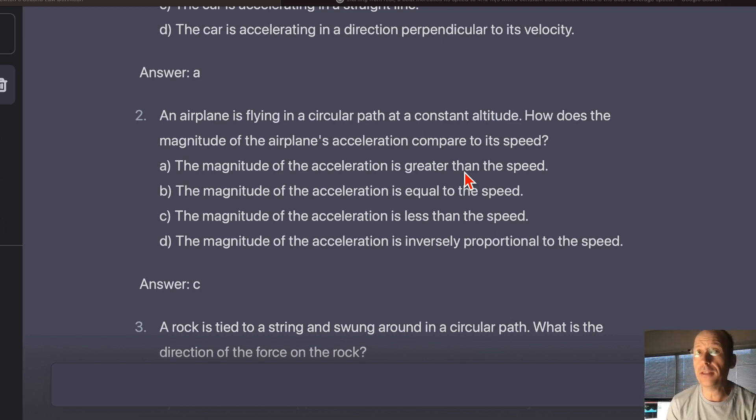That's like saying which is greater, your height, your weight. Well, it depends on what I measure my height in and what I measure my weight in. Right? So you can't really compare. The magnitude of the acceleration is equal to the speed. The magnitude of the acceleration is less than the speed. The magnitude of the acceleration is inversely proportional to the speed. It says the magnitude of the acceleration is less than the speed.